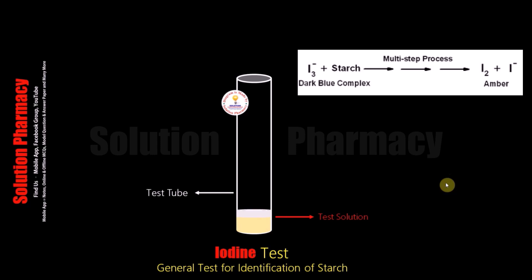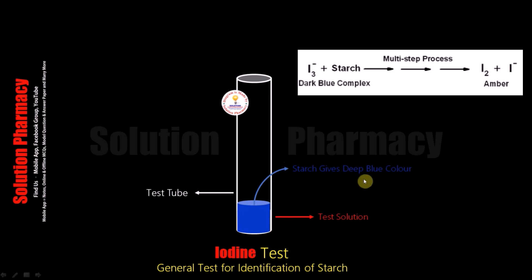After this, mix the contents of the test tube. If the color of the solution converts into a dark bluish color upon adding iodine solution, it means starch is present in our test solution. Starch gives a deep blue color, meaning the starch in our test solution has reacted with the iodine to form a dark blue complex of iodine-starch.